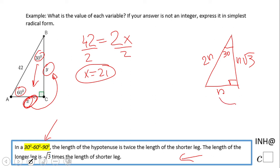Then the next guy here, y, is the same as the leg, we just multiply by square root of 3. And that's it.